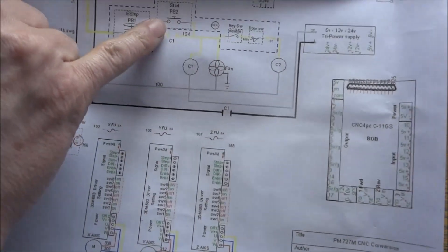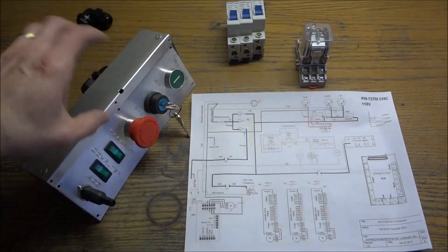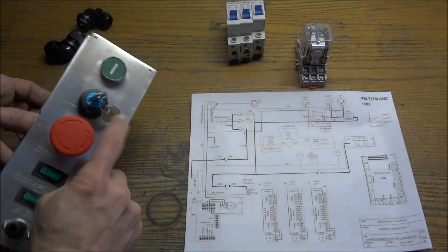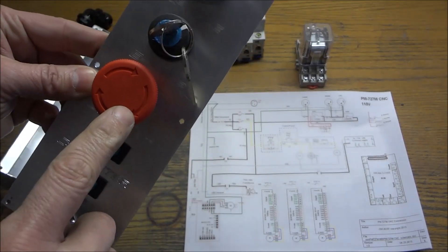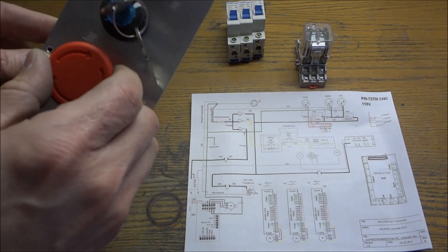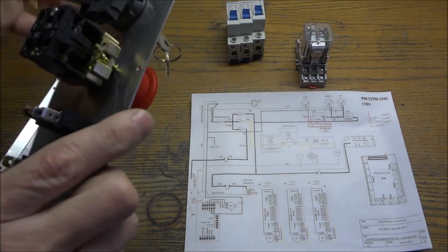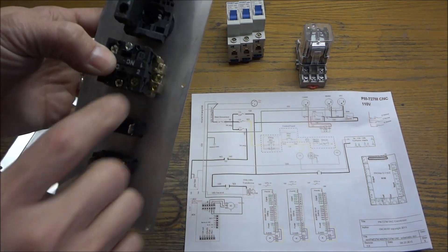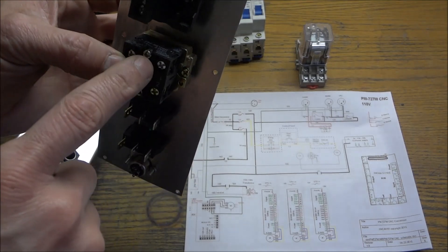And also one set of contacts that is our holding circuit that keeps everything energized once you let go of the momentary push button start. I had to order my start button which came in, or my power on button, and I also changed out my e-stop. I didn't like the one I had so I ordered a different one. It has the same type contacts as the start button. The start button of course is normally open and the e-stop is normally closed. You will need two sets of normally closed contacts on the e-stop.